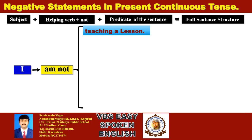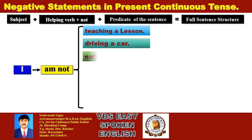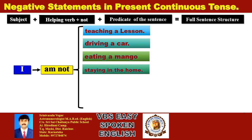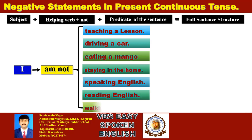Examples: I am not teaching a lesson. Just add 'not' for negation — I am teaching a lesson becomes I am not teaching a lesson. I am not staying in the home. I am not speaking English. I am not reading English. I am not walking on the road.